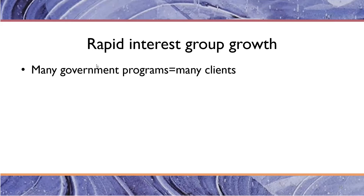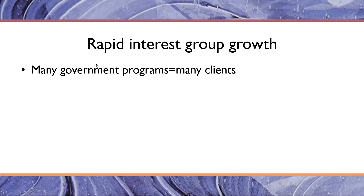Another reason for rapid interest group growth is the lack of legal constraints against group formation in a democracy. Nothing prevents people from forming groups. Indeed, the Constitution acknowledges that people have the right to peaceably assemble and petition Congress for the redress of their grievances. The First Amendment invites the creation of interest groups. There are resource constraints — if you're a very unpopular group you may not get attention — but nothing prevents people from attempting to form groups.